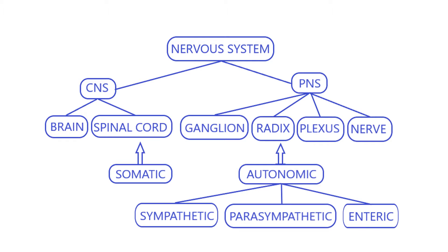Functionally, somatic and autonomic nervous systems are distinguished. Both classifications are to some extent tentative because the functions of the nervous system are based on reflex arcs, which include the central and peripheral parts and regulate the activity of either the body or soma and its internal organs.